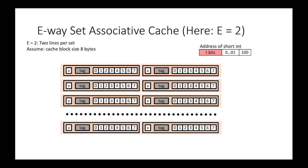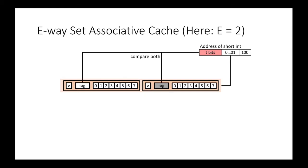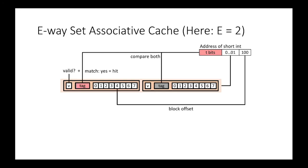For E-way set associative cache, the only difference from direct mapped cache is the second step. First, we use the set index bits to locate the target set. Next, we compare tag bits between multiple cache lines in this configuration and the memory address. If we find a cache line that has a matching tag and its valid bit is 1, it's a cache hit. In a 2-way configuration, we need two comparisons of tag bits, as there are two cache lines in each set. In the case of a cache hit, the final step is to locate the data or instruction using the block offset.